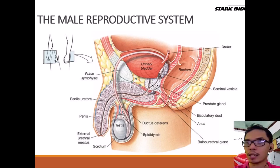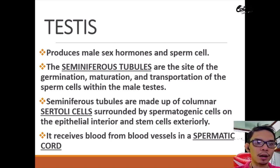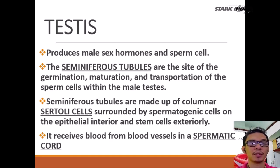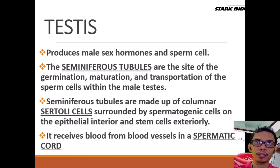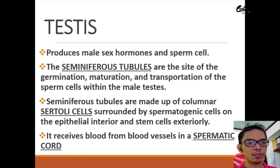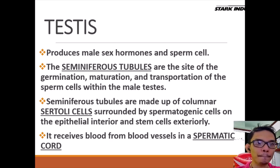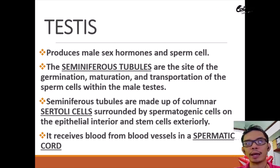The first and most important organ is the testes. The testes is the organ that produces the male sex hormone and at the same time produces the male sex gametes — testosterone and sperm cells are produced here. There is a part of the testes which is very important called the seminiferous tubule. The seminiferous tubule is the site where sperm grow, develop, and are transported within the male testes.